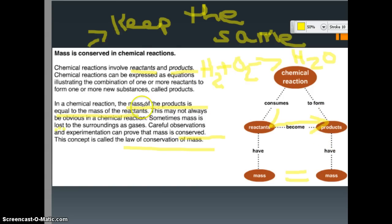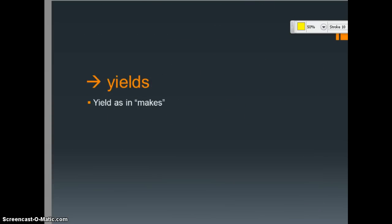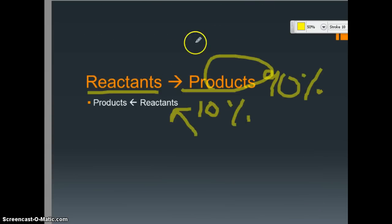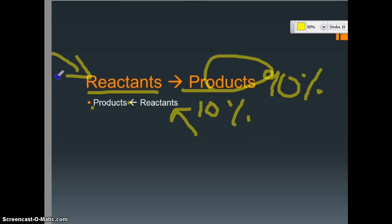You can turn the equation around — you can put the products on the left. It's whatever the arrow points to; the arrow points to the products. Most of the time we see it in this format. That, and the Law of Conservation of Mass, is all you need for this lesson. When you're done with your notes and reviewing, go ahead and take the quiz.